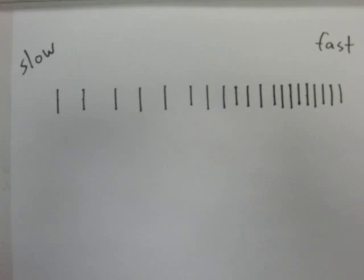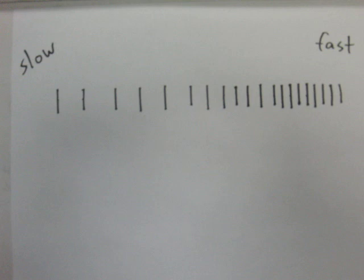But what if you're a highly trained advanced athlete? You're going to have more fibers over on that fast twitch end of the spectrum. Then you strength train — you shift some of those fibers on the end down a little. They're still fast twitch, but not quite as fast. So you progress toward a distribution that is overall a little bit less fast twitch. For running and jumping athletes, that's a negative adaptation.